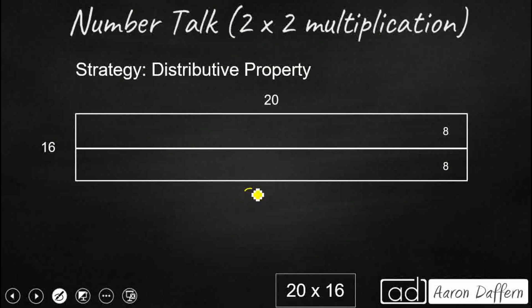We could also use the distributive property to take a look at our 16. So let's take our 16 and let's cut that in half. So we're going to make that an 8 plus 8. And then we're just going to distribute out that 20 and multiply by both addends to get us some really simple partial products.